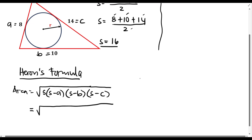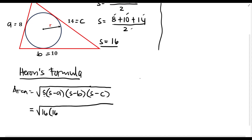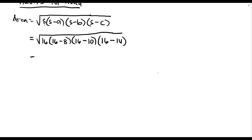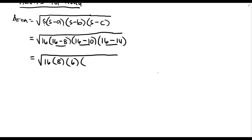Now substitute the values. We have the square root of 16 times (16 minus A, which is 8) times (16 minus B, which is 10, giving 6) times (16 minus C, which is 14, giving 2). So under the radical we have 16 times 8 times 6 times 2.